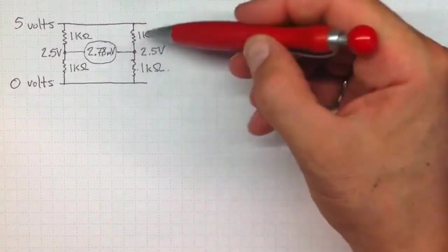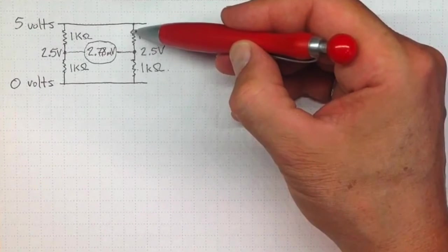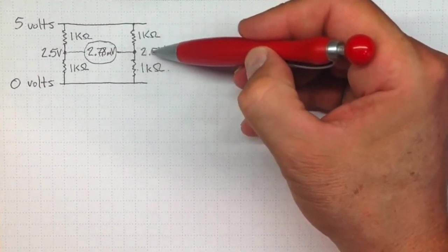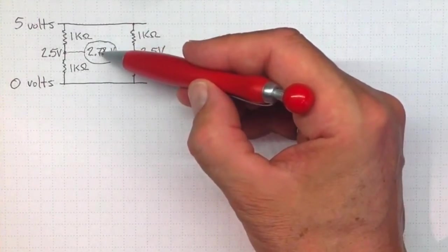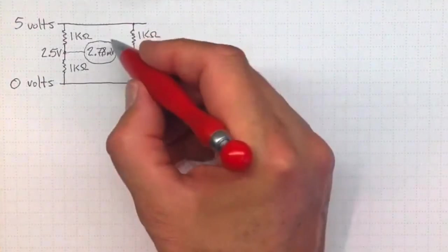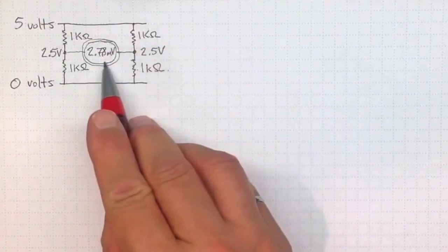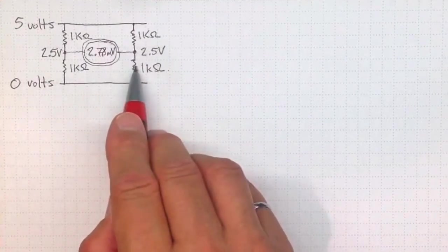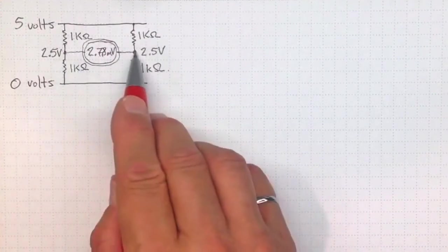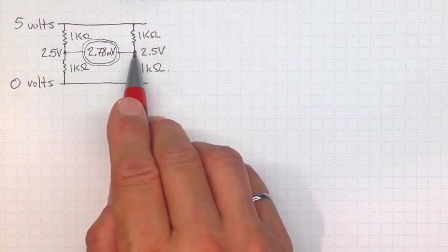Likewise, if we left this one the same and decreased this one, then this voltage here will become a little bit bigger. And the difference between them will change. So this measurement in between provides us with an indication of very small changes in these resistances. Because it's measuring the difference between two voltages that are very close to the same.